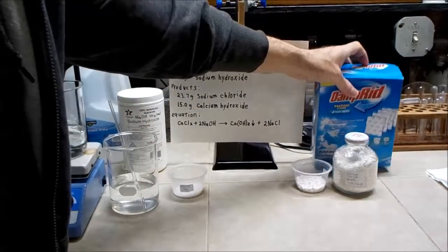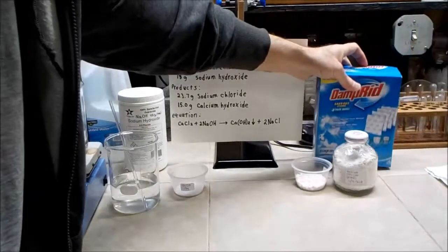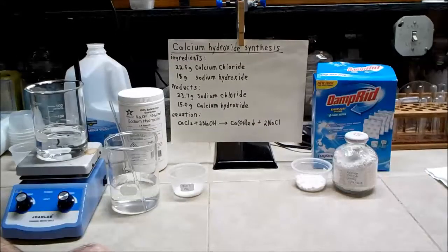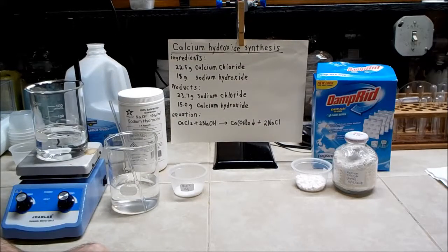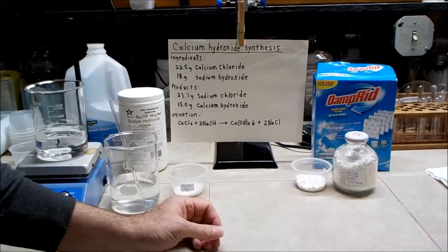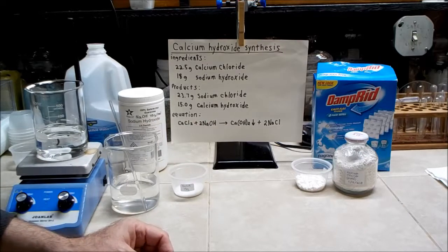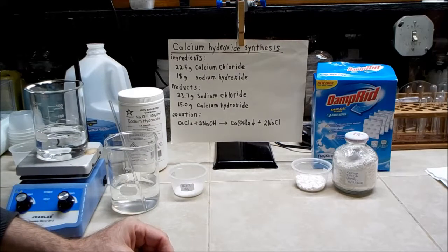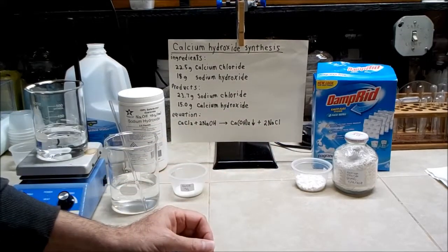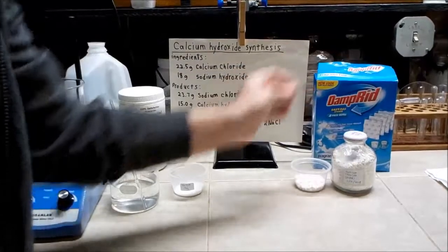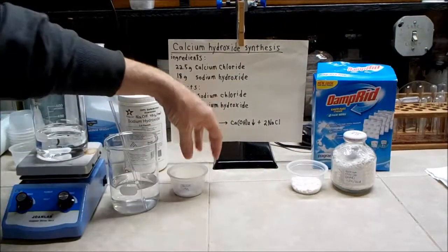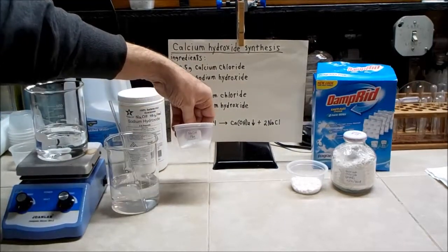Now originally I believe this came from this product called Damp Rid, which you would think it would already be anhydrous, but I don't think that's the case. It has some water in it, so I dissolved it in water and then evaporated and filtered out because it didn't look like it was very pure. It had some solids in it, so I filtered that, then dehydrated it and put it in an airtight jar. So here I have 22 and a half grams of calcium chloride.